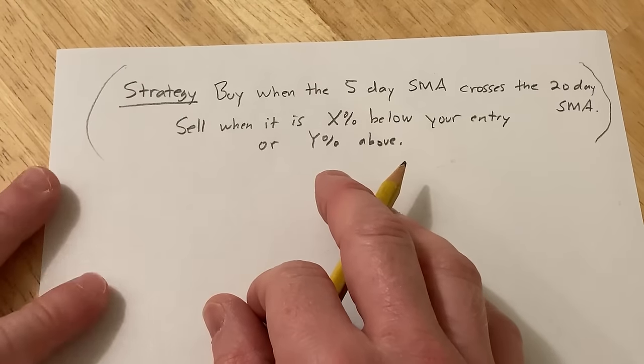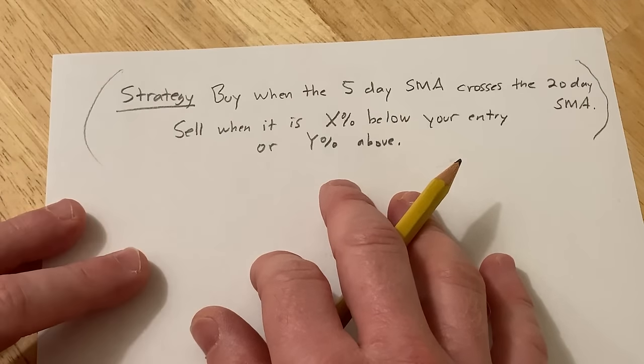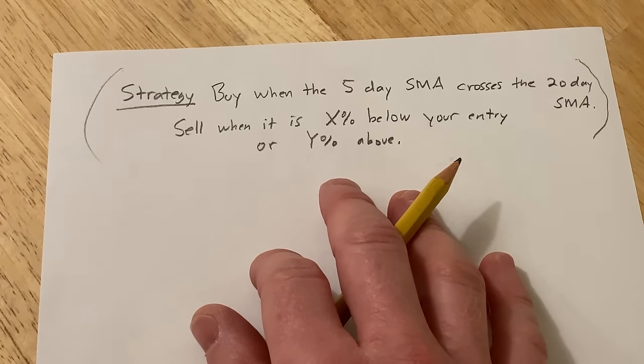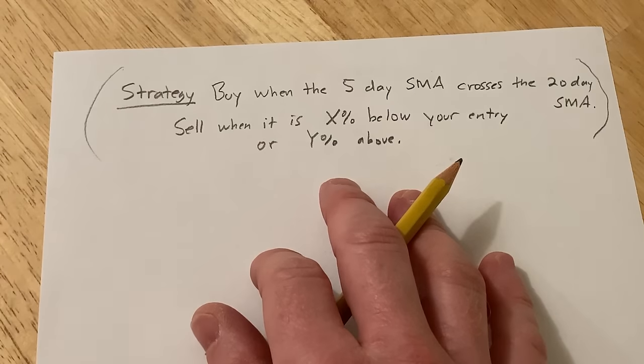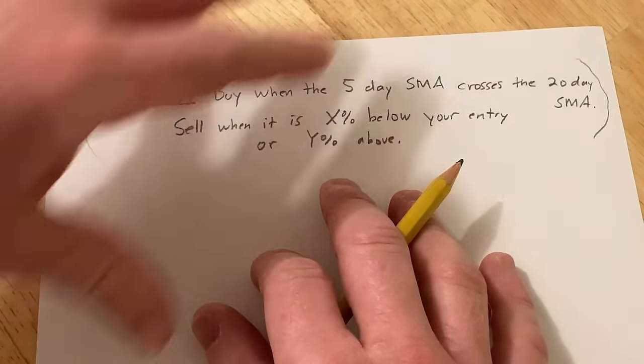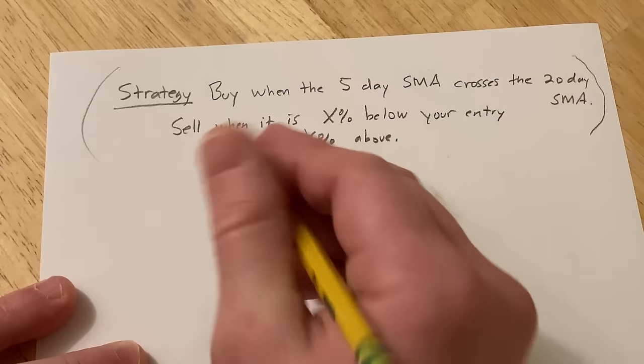So you have a couple options now. You can either backtest your strategy using some type of software or you can actually just try to do it—go out there and put your money on the line and see what happens. Most people will use some type of software to backtest your strategy. Let's say that you test this strategy on some historical data and you get the following information.